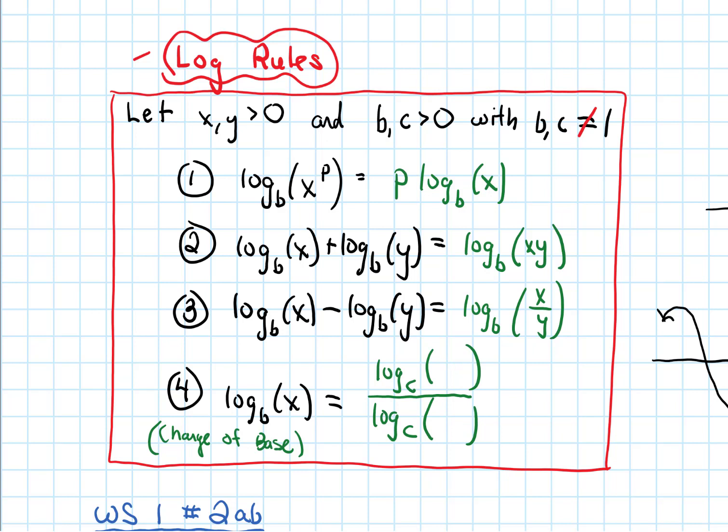And with the change of base rule, the way I personally remember what goes in which parentheses is if I look at my original log, the value that's sort of written higher up on my page goes on the inside of the top log. So x is written higher up on the page because the B is written all the way down here, so x gets written on the top log, B gets written on the down log. This is how I personally, it's a little shortcut for me to remember what goes where.